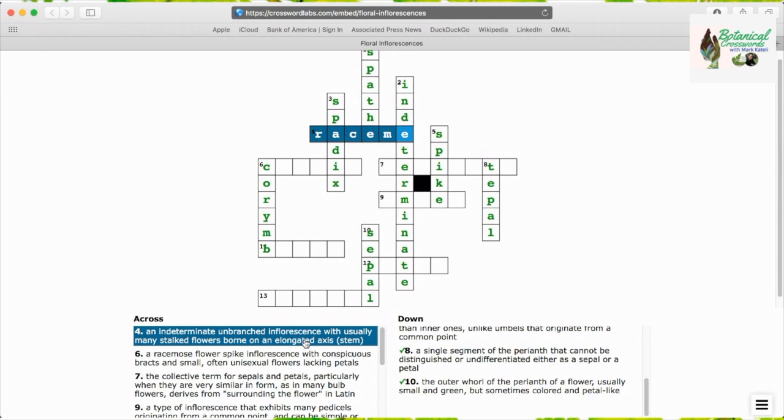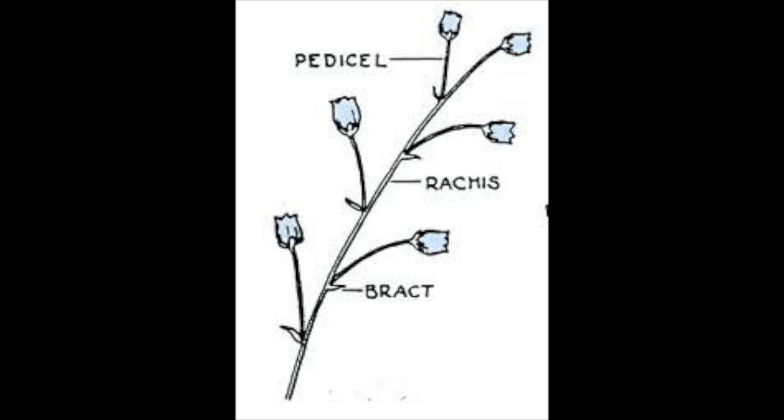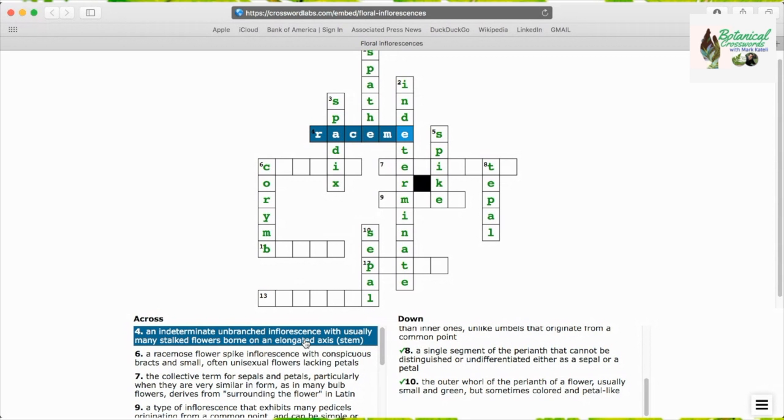Raceme, an indeterminate unbranched inflorescence with many stalked flowers borne on an elongated axis.